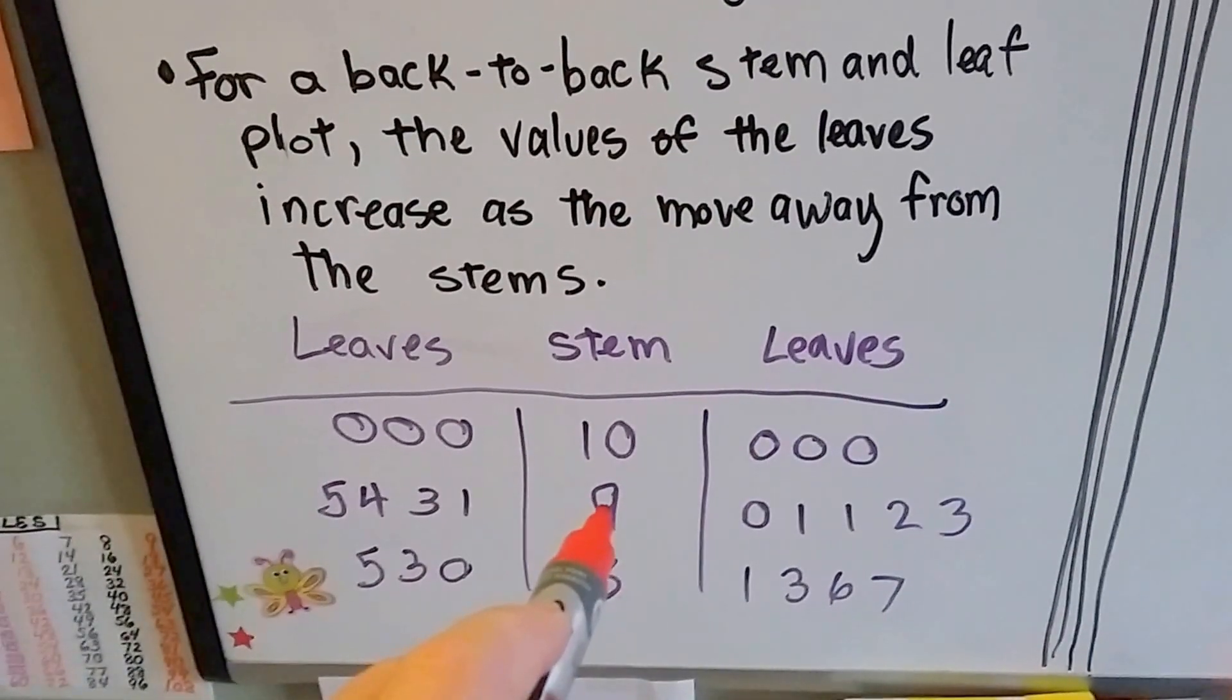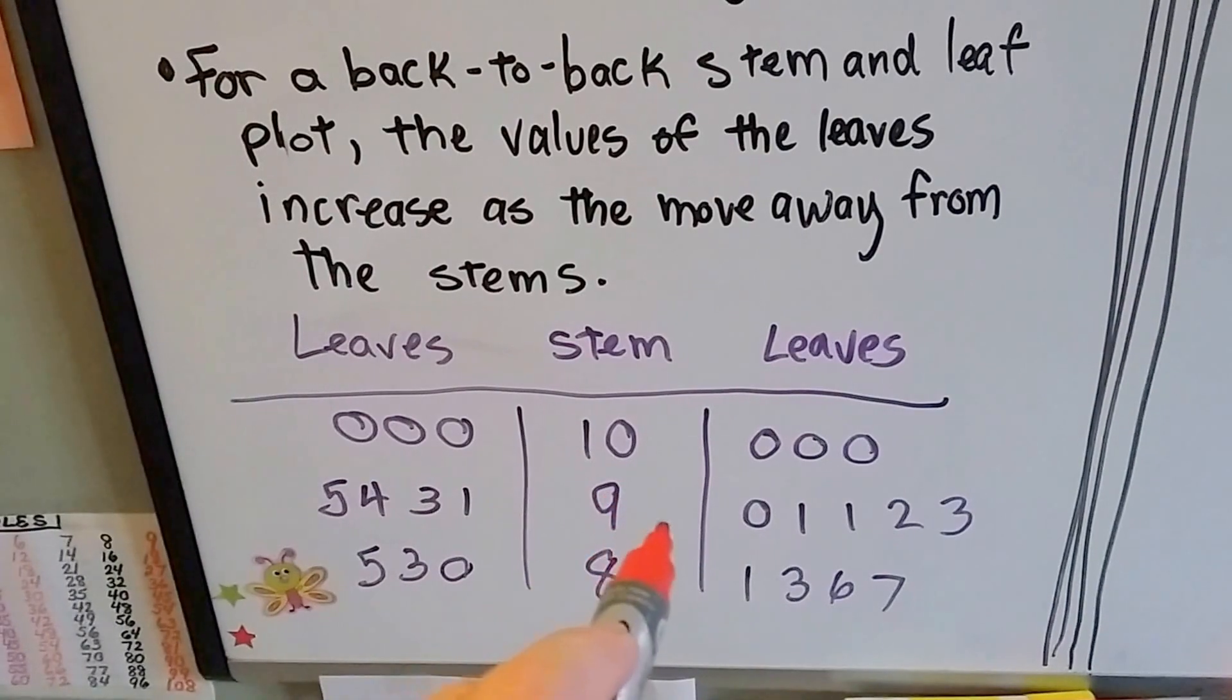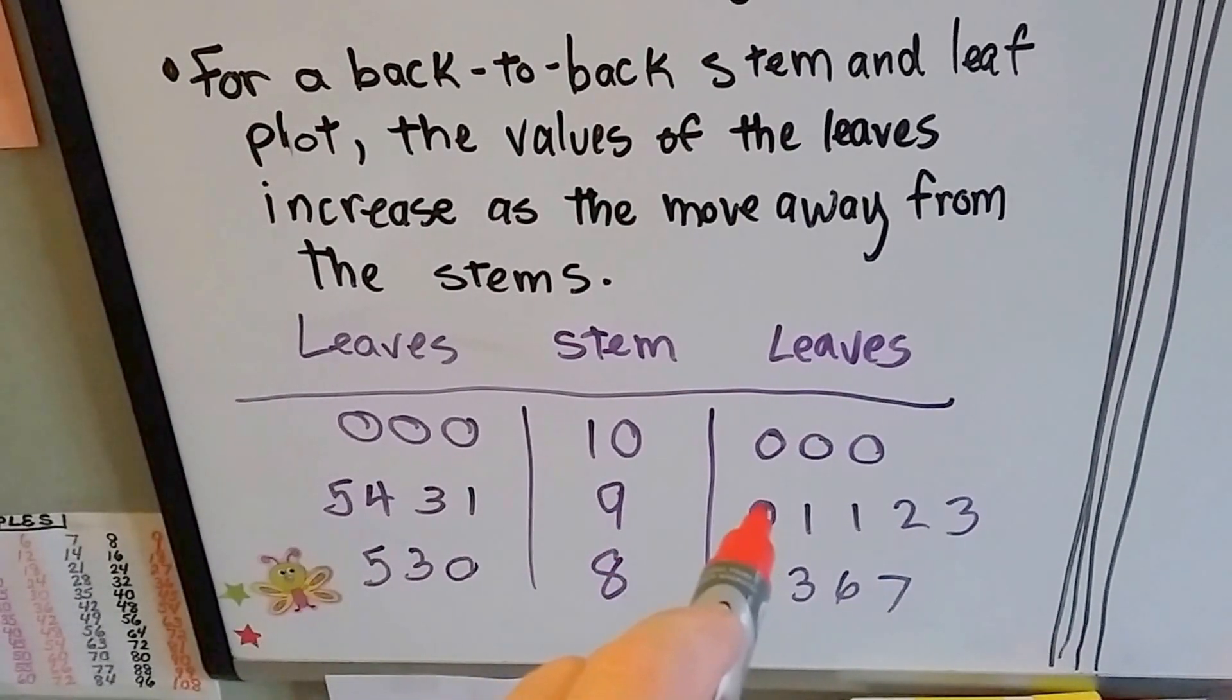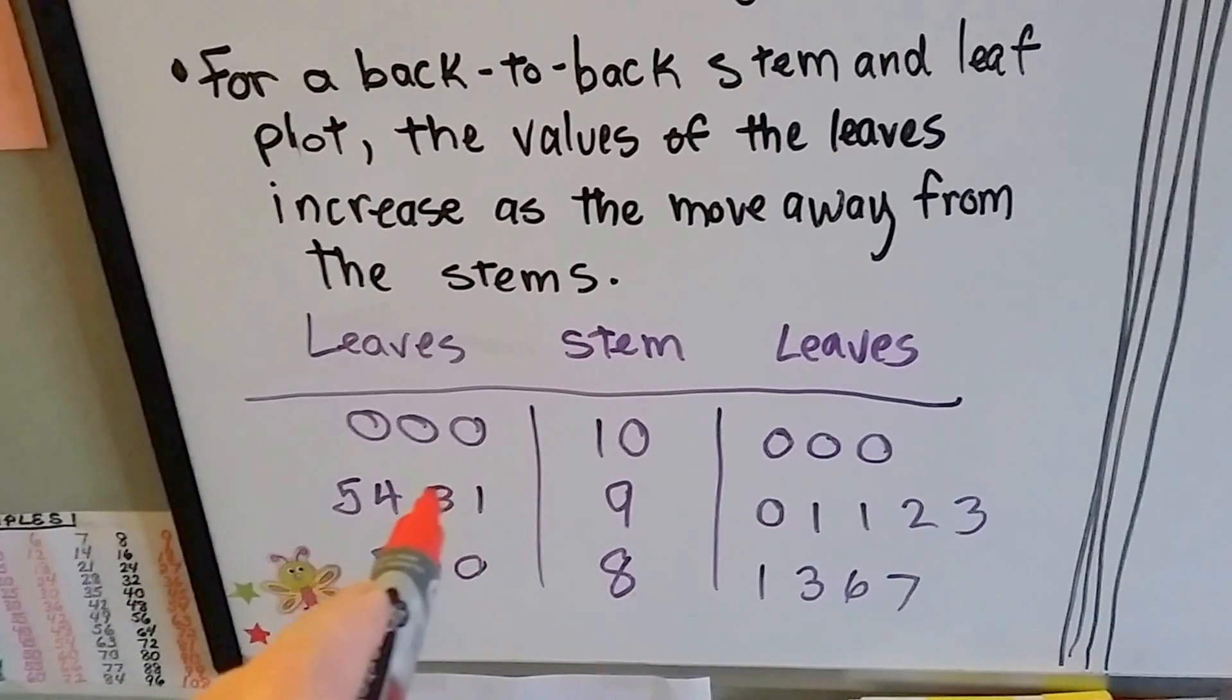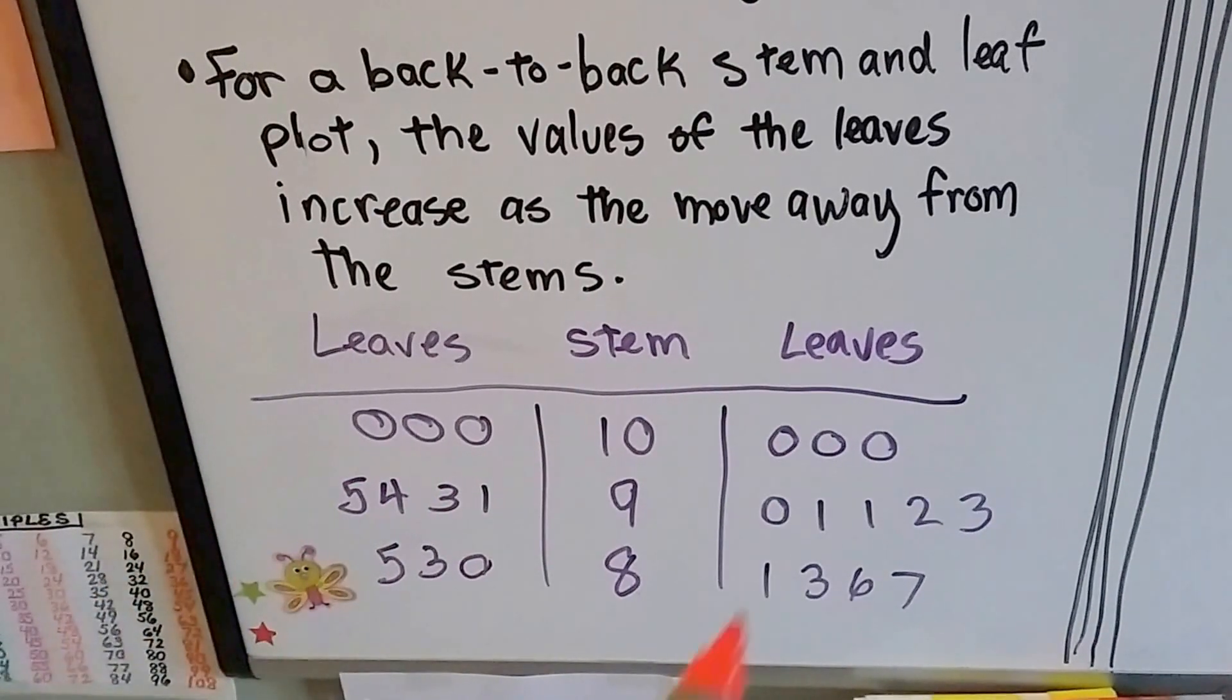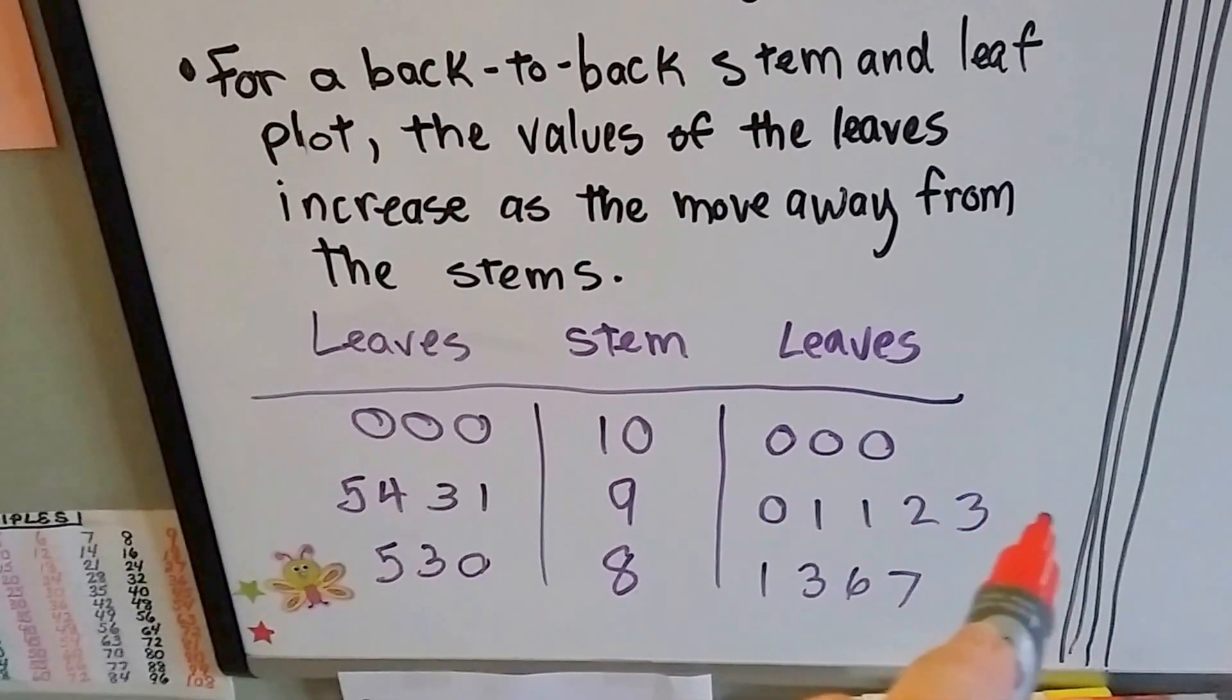And if they got a 90, here's the nine in the tens place value and the zero in the ones place value. For this group, it goes up in ascending order away from the stem, and in this one it goes up in ascending order away from the stem.